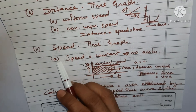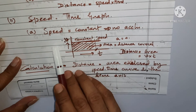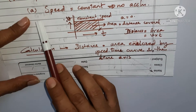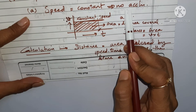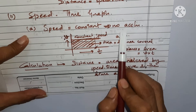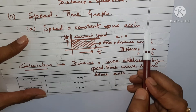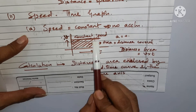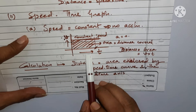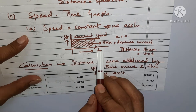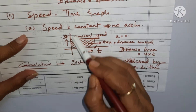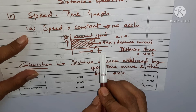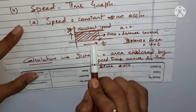Now for a quick review of the speed-time graph: there are three types of cases. In the first case (Case A), speed is constant, so there is no acceleration. The graph gives a straight line parallel to the x-axis (the time axis), showing that velocity remains constant. Time is on the x-axis and speed/velocity is on the y-axis.